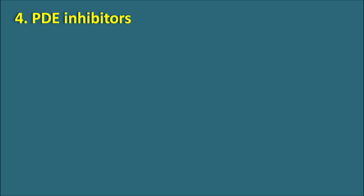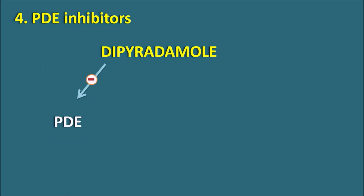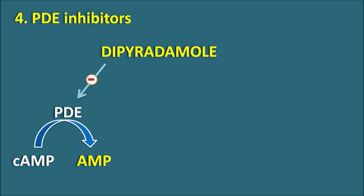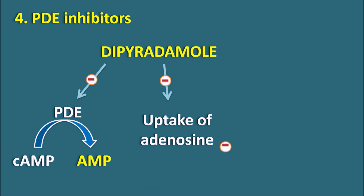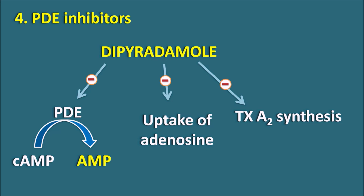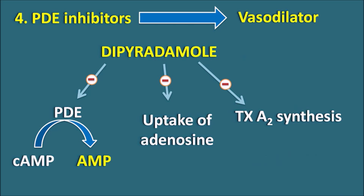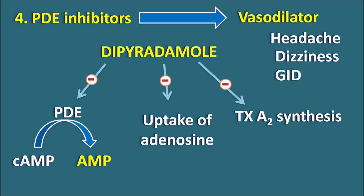The fourth category is phosphodiesterase inhibitors. One important drug is dipyridamole, which has multiple mechanisms of action. It inhibits the phosphodiesterase enzyme responsible for converting cyclic AMP into AMP, so metabolism of cyclic AMP is inhibited. When this enzyme is inhibited, cyclic AMP levels increase, resulting in vasodilation. Dipyridamole can also inhibit uptake of adenosine as well as inhibit thromboxane A2 synthesis. By all these actions, dipyridamole produces anti-platelet activity and vasodilation. This vasodilatory effect produces side effects like headache and dizziness, as well as gastrointestinal side effects like dyspepsia and diarrhea.